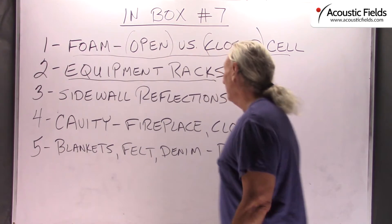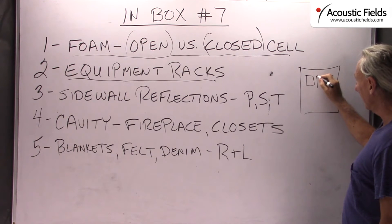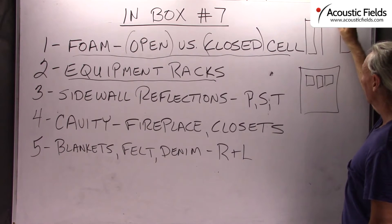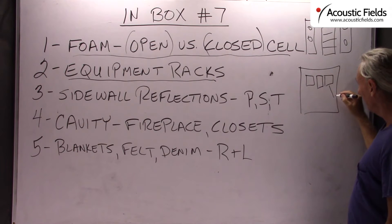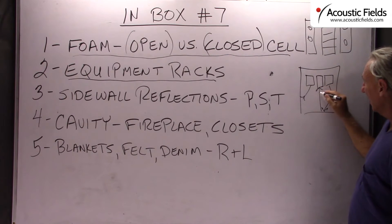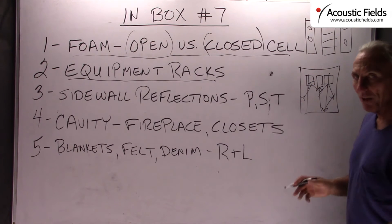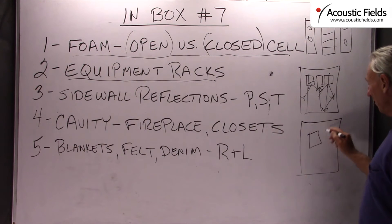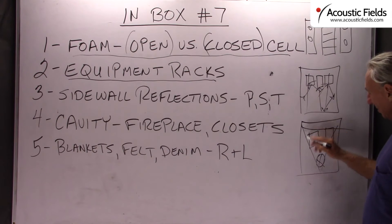I see this a lot in two-channel setups in people's homes — the equipment rack. Remember, this is sacred territory. I see equipment racks placed between the speakers, and if you look at the elevation of the speakers, the equipment rack is sometimes as high as the speakers themselves. Energy is moving all around the room, and eventually it's going to strike that equipment rack and cause destructive interference across the direct, wanted energy from the speaker. You're creating another reflection point at a very bad position between the two speakers. This area is sacred — don't put anything in this triangle.